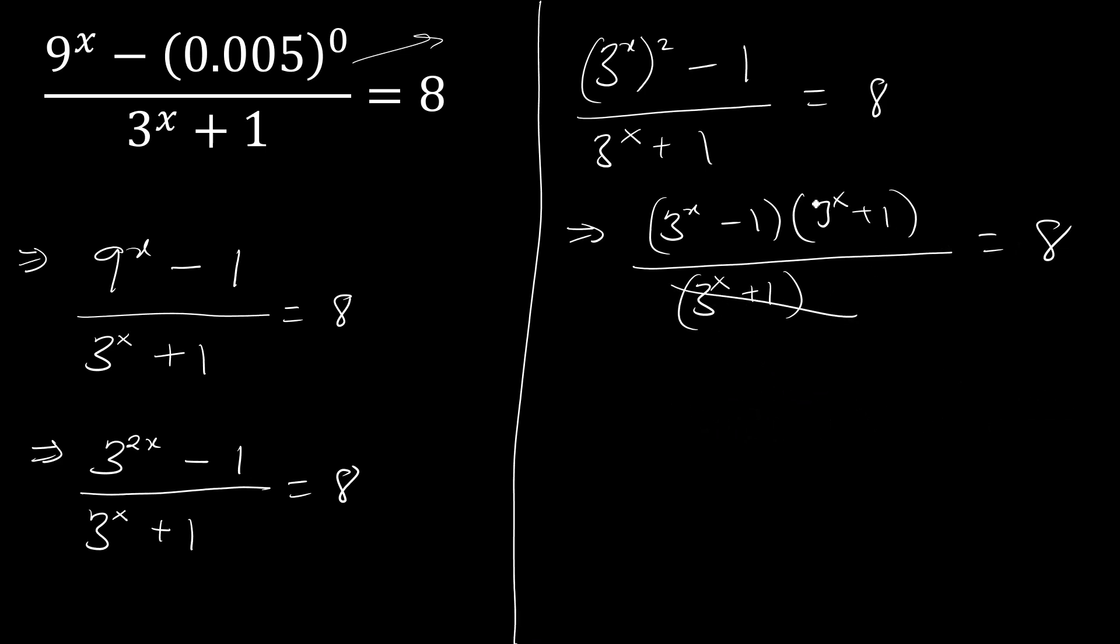I just want to cancel this. It's very simple. So we can add 1 to both sides, which will be 3 raised to x equals to 9. Therefore, 3 raised to x will give me 3 raised to 2, so x equals 2.